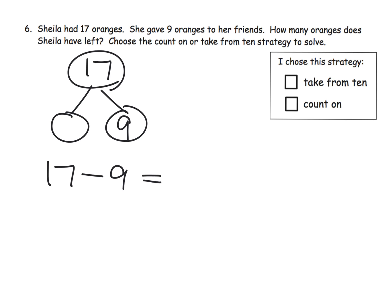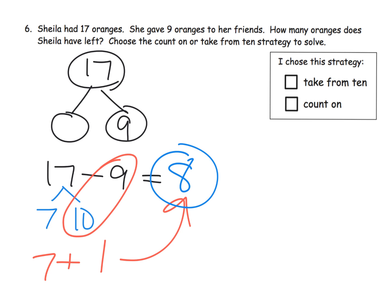If we're going to use the take from 10 strategy, I'm going to take that 17 and decompose it to be 7 and 10. We're going to do 17 as 10 and 7, and then we can see that 10 minus 9 is 1, so 1 plus the original 7 gives us the answer of 8. I'm going to call that the take from 10 strategy.